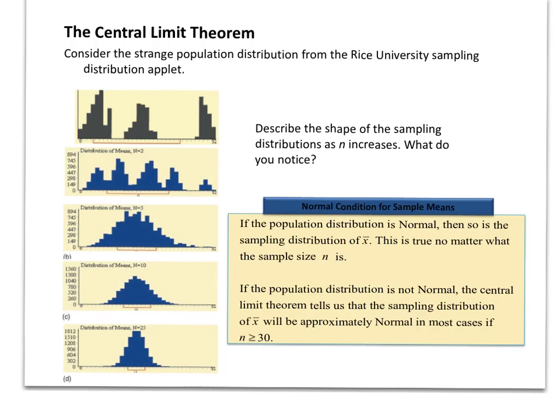So here's the situation. This is an applet that we'll take a look at in class. Here's our population, a very, very strange population. This would actually be something that has tri-modal. It has three different modes. And if you look here, we're going to take samples of larger and larger size. This is the samples of two, and you can see it's got a really interesting pattern, somewhat related to the population, but certainly different.